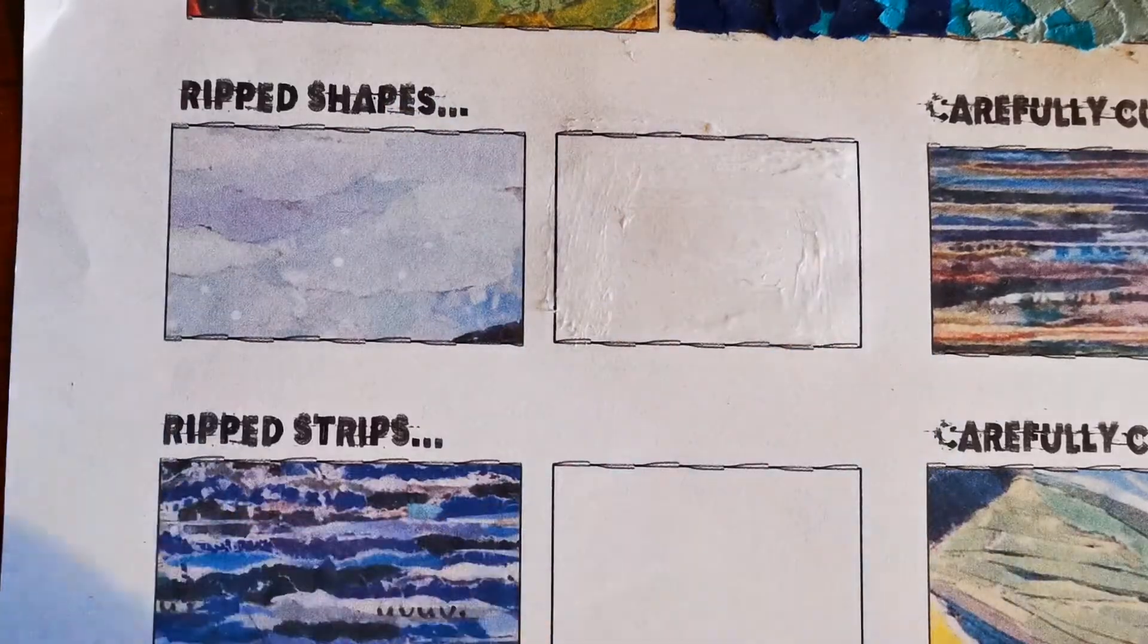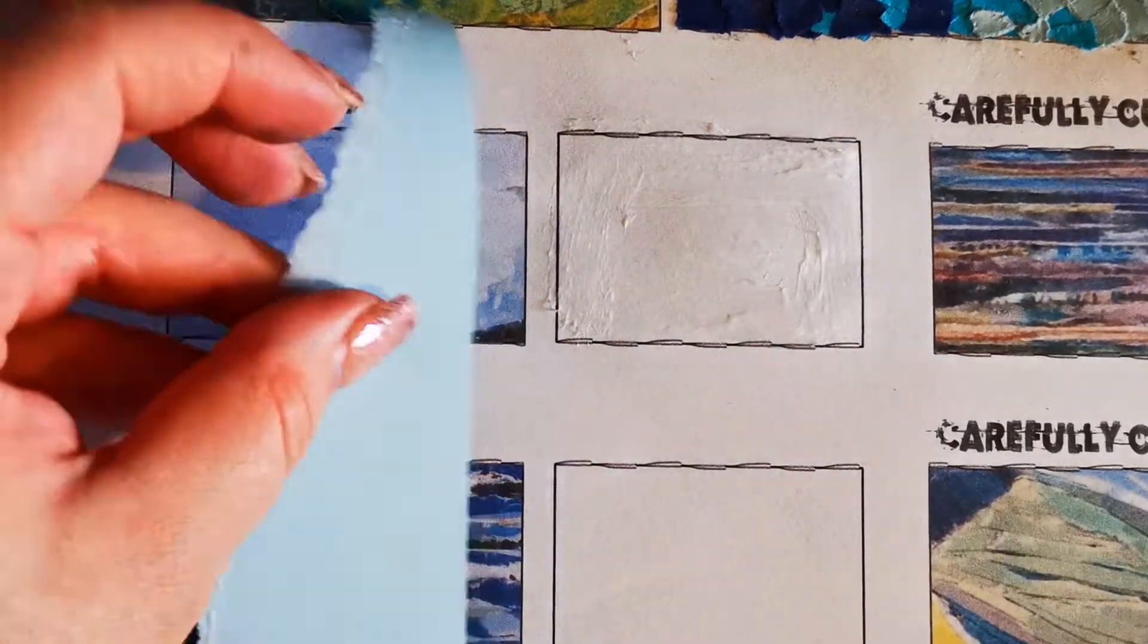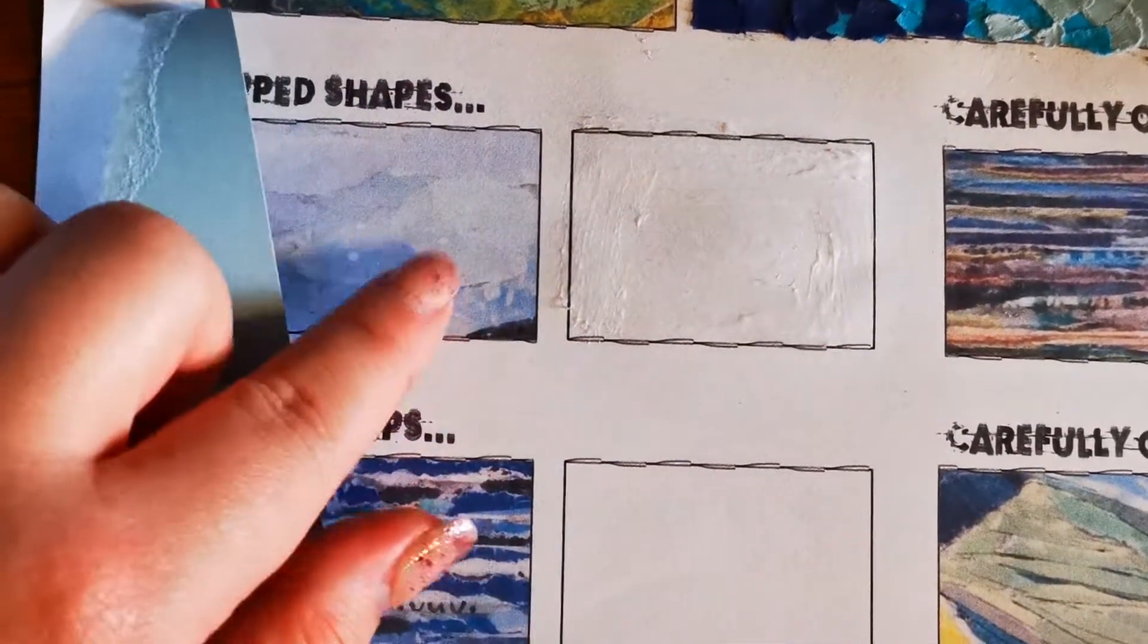I'm just going to take this medium blue and this light blue and I'm going to create some sort of cloud-like shapes just like this here.